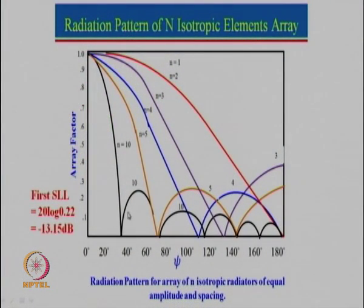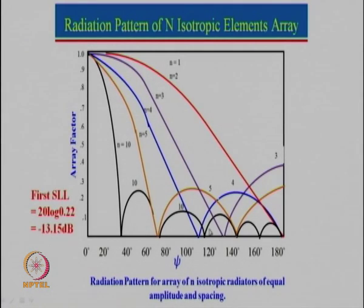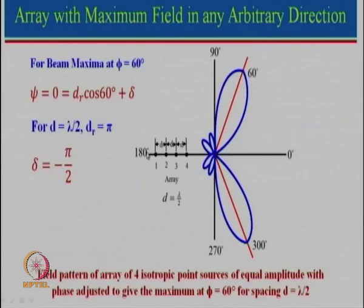We can see that the array is reducing down to a certain value, but there is a possibility that if we increase the psi value beyond 180 degrees — going from 0 to 180 and then to 360 degrees — at psi equal to 360 degrees again the radiation will be maximum. So if that value happens somewhere in this domain for some other value of phi, that can give rise to a grating lobe. We should always try that psi should not become 2π, because if psi becomes 2π we will again have maximum radiation, which is known as a grating lobe.